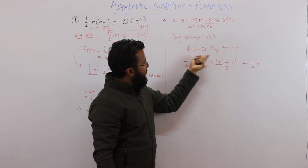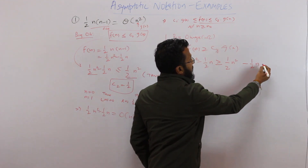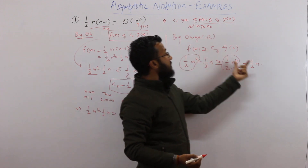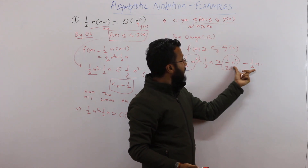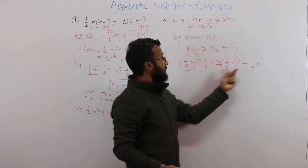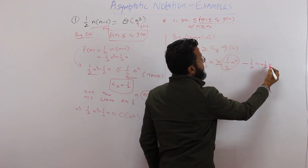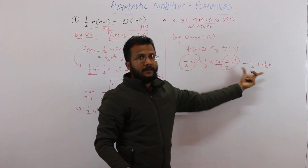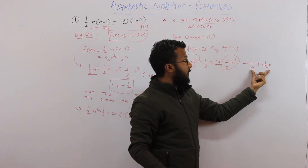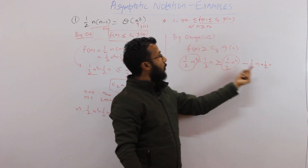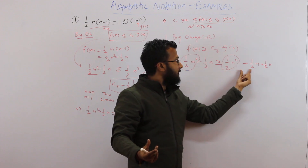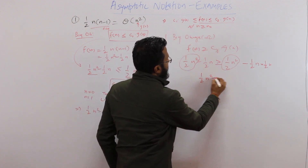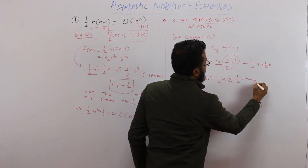If I subtract ¼n² from the right-hand side instead of ½n, I am subtracting a larger value there. So the right-hand side will be less than the left-hand side, which is what we want. Therefore: ½n² minus ½n is greater than or equal to ½n² minus ¼n², which simplifies to ¼n².